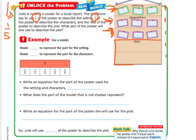What part of the poster will she use to describe the plot? Now, we can kind of see from this model already here that our answer is going to be two-fifths. But let's go ahead and go through all this math just to help us understand. So first, we're going to use a model that says shade blank to represent the part for the setting. I've got to look back up here and see that my setting is one-fifth. So I'm going to shade one-fifth to represent the setting.